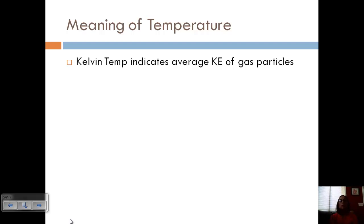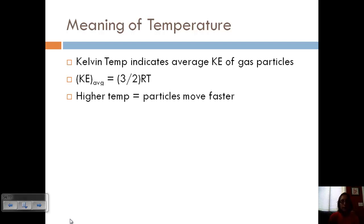Temperature is related to the kinetic energy of particles. Kelvin temperature indicates the average kinetic energy of the particles — that's what temperature is, it's an indication of how fast the particles are moving. The equation for average kinetic energy is 3/2 times R times T. So the higher the temperature, the faster your particles are going to move and the more kinetic energy they're going to have.